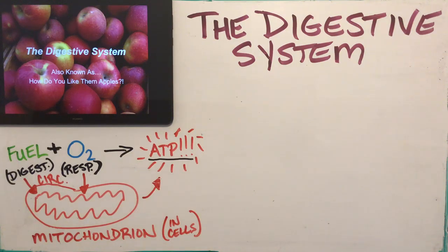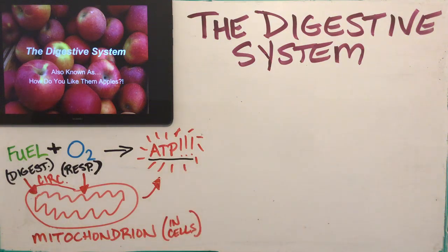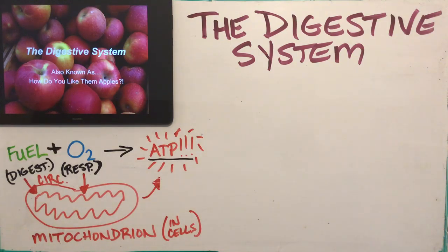Once the fuel and oxygen are in the cell, the mitochondrion — the powerhouse of the cell — is the one that makes ATP, hence it being called the powerhouse of the cell.